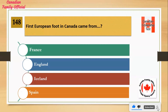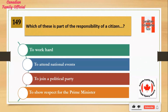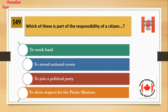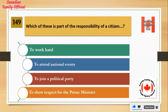The first European foot in Canada came from: Number 1: France. Number 2: England. Number 3: Iceland. Number 4: Spain. And the answer is Iceland. Which of these is part of the responsibility of a citizen? Number 1: to work hard. Number 2: to attend national events. Number 3: to join a political party. Number 4: to show respect for the Prime Minister.